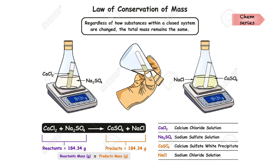The next is the law of conservation of mass: regardless of how substances within a closed system are changed, the total mass remains the same. In this experiment, a conical flask contains sodium sulfate solution with a test tube of calcium chloride solution inside it. When shaken together, the two react to form calcium sulfate and sodium chloride. The mass before the reaction is 184.34 grams, and after the reaction the mass is still 184.34 grams — which confirms the law of conservation of mass.